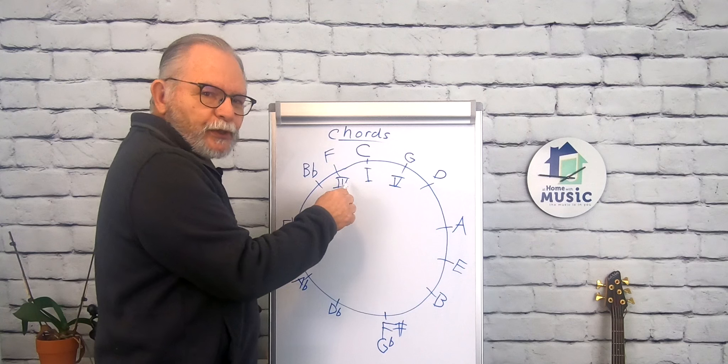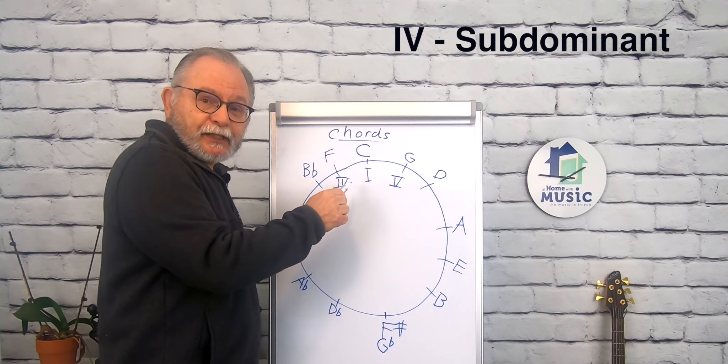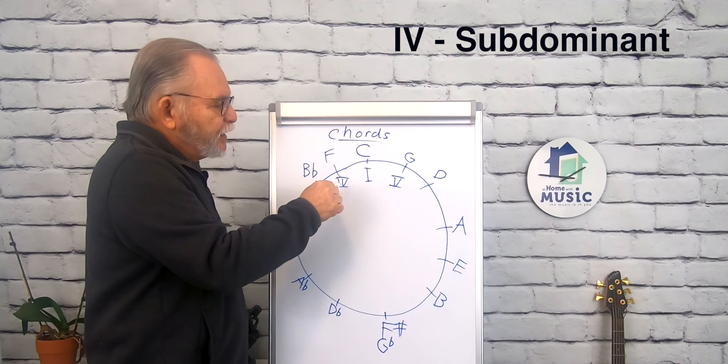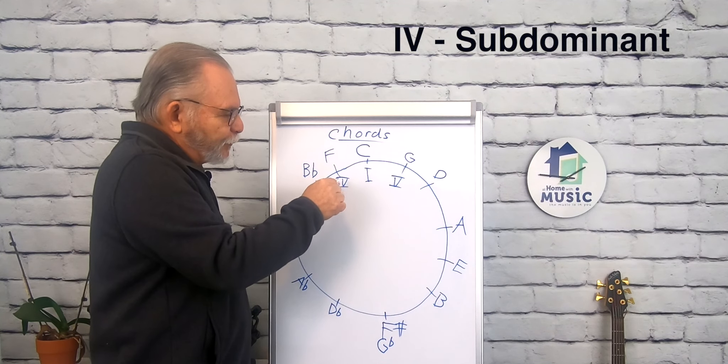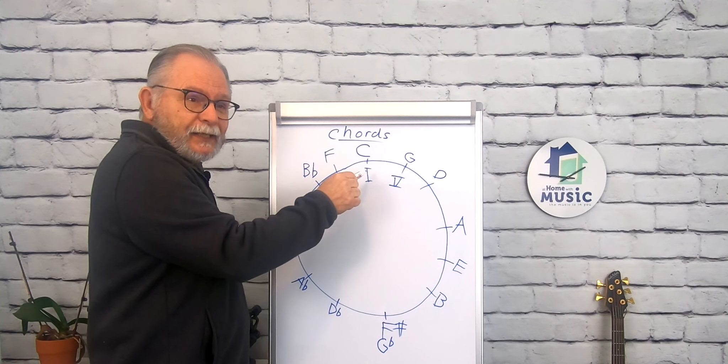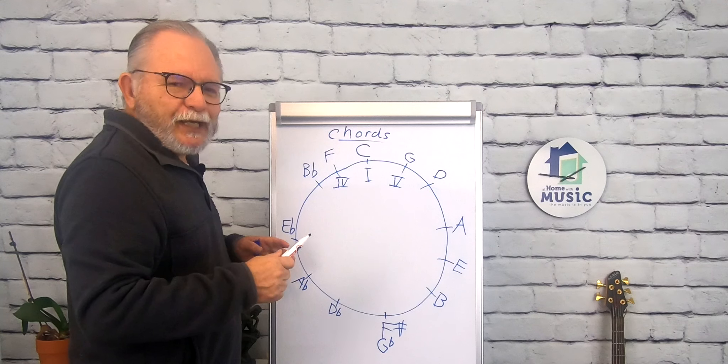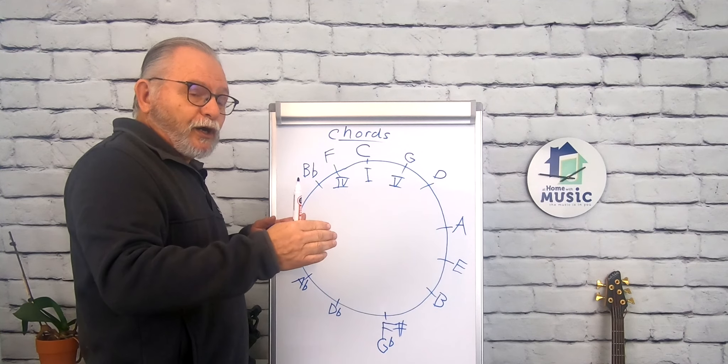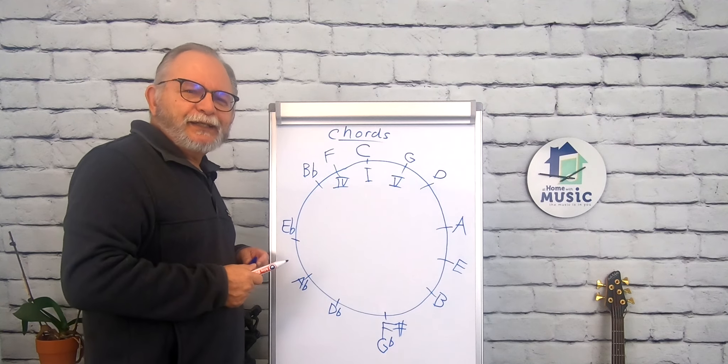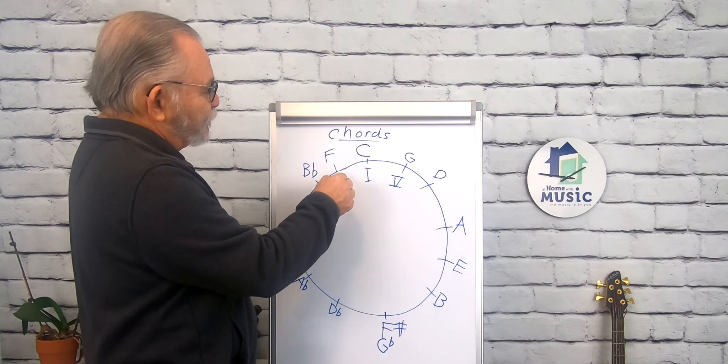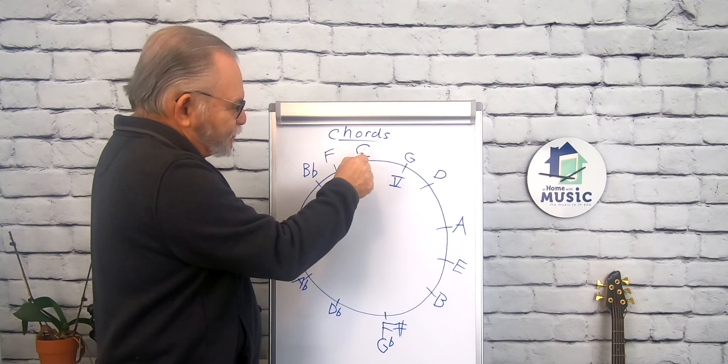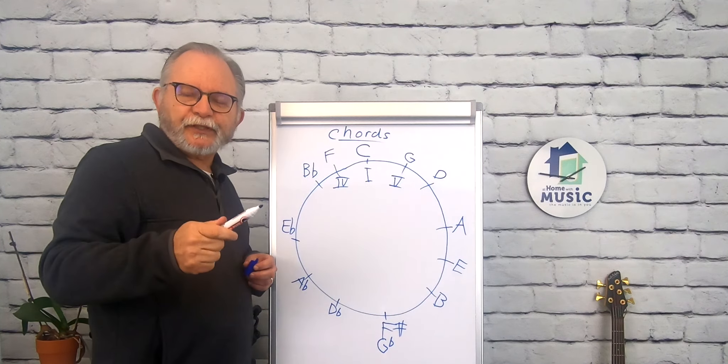The four chord is the subdominant in the key of C, F. F major in the key of C is the four chord. The four chord can go back to the C major chord directly. And if you've ever sung a hymn and you get to the end and you sing amen, that's the amen cadence if you like. And that's going directly from F to C. You can also go F, G, C. And I'll demonstrate these on the keyboard as well.